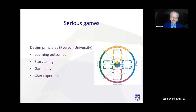Ryerson University in Canada has been doing quite a lot of research on the design of serious games and they've come up with four key elements. Every game should have clear learning outcomes — what it's trying to teach. There should be a good storyline, good storytelling in the game that links all the bits together. There is the actual playing of the game, and then there's the experience of users — of students — in interacting with the game. You can have all three elements, but if the user experience isn't satisfactory, the game is not going to succeed.